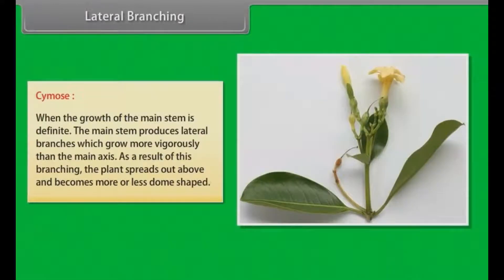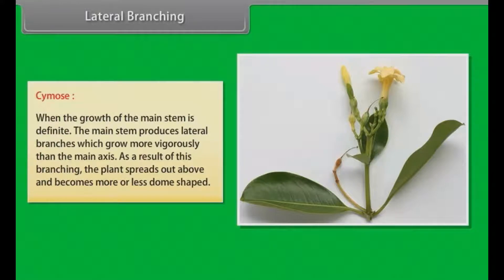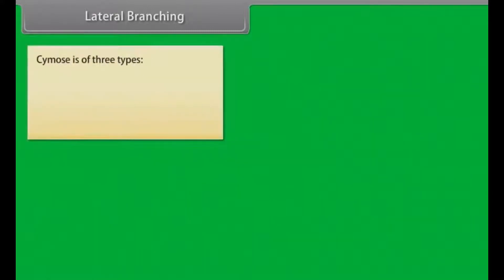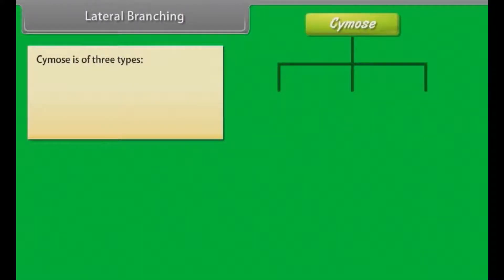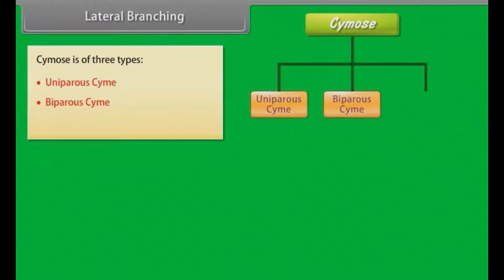In cymose branching, the growth of the main stem is definite. The main stem produces lateral branches which grow more vigorously than the main axis. As a result of this branching, the plant spreads out above and becomes more or less dome-shaped. Cymose is of three types: uniparis cymose, biparis cymose, and multiparis cymose.